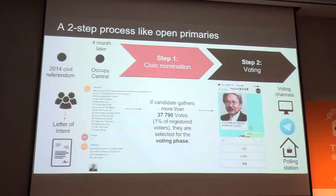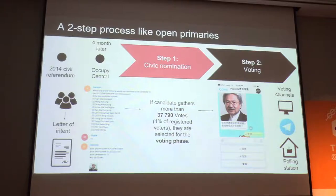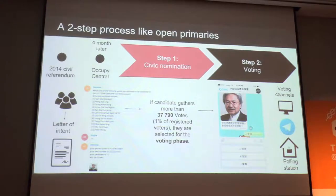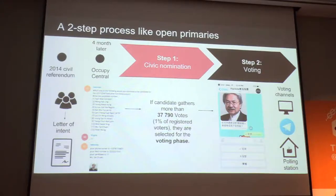In 2013 there was a civil referendum, then there was Occupy Central, and this new referendum occurred in 2017. It was an open primary process where people could nominate civilians for chief executive election. People could participate by submitting a letter of intent and then entering the list of candidates. If they got 1% of the registered voters on the platform, they would get into the official vote — the implementation of what was decided in 2014.